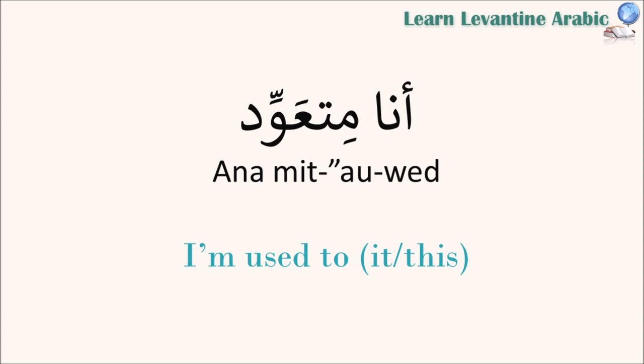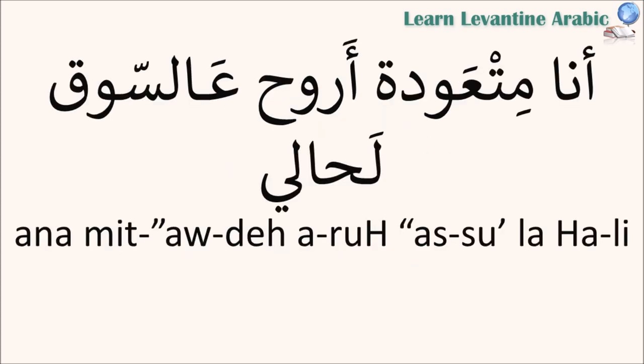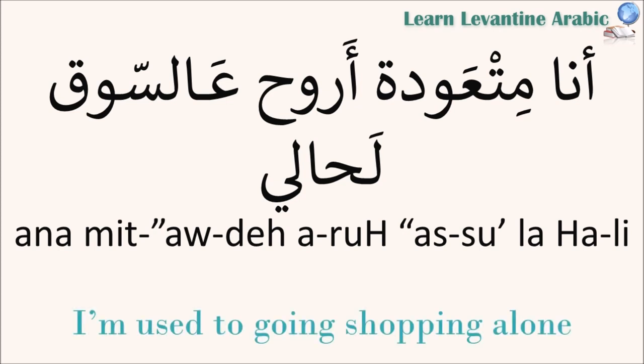You can say 'I'm used to this' or 'I'm used to it' — in this example a man is speaking. Let's take another example: 'I'm used to going shopping alone.' Sometimes we drop a sound. If you'd like to learn more about the verb 'to go', I have made a detailed video about its conjugation and how to use it — I'll leave a link in the description box below.